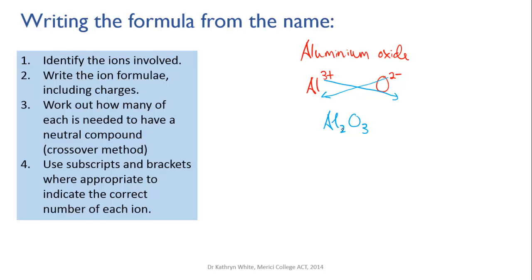To check that that works in terms of charges we've got two aluminums and each of them is three plus which equals a total positive charge of plus six. And we have three oxygens and each of those is minus two. Three times minus two is minus six. So plus six and minus six cancel out and we have our neutral compound.